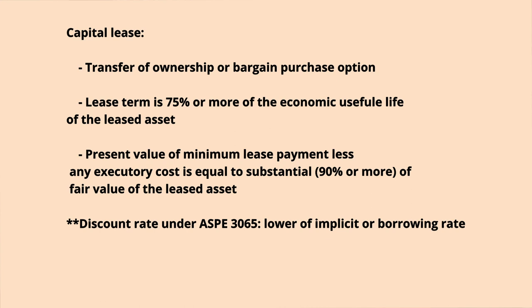Is it the same under ASPE 3065? No, it's not. Under ASPE 3065, you have to analyze and recognize the type of lease for both parties — lessee and lessor. Under IFRS, you analyze the type of lease only for the lessor. Under ASPE 3065, there are two types of lease for the lessee: capital lease and operating lease. The capital lease criteria are almost the same as finance lease under IFRS 16, and if one and only one of these criteria is met, it is considered a capital lease.